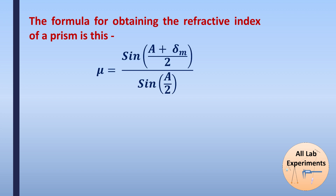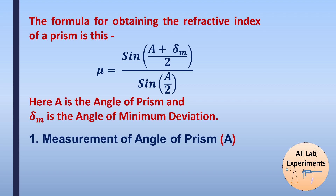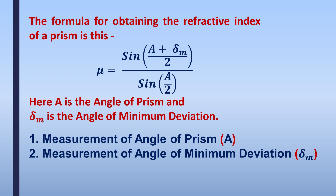The formula contains two basic quantities: A is the angle of prism, and delta m is the angle of minimum deviation. Basically, this experiment has two parts — one for the measurement of the angle of prism, and the second for the measurement of the angle of minimum deviation.